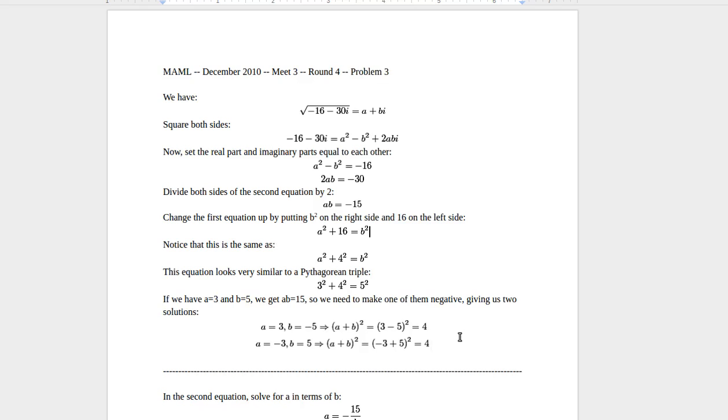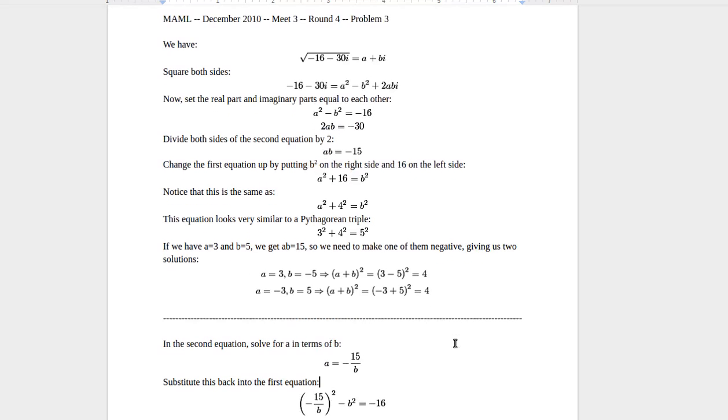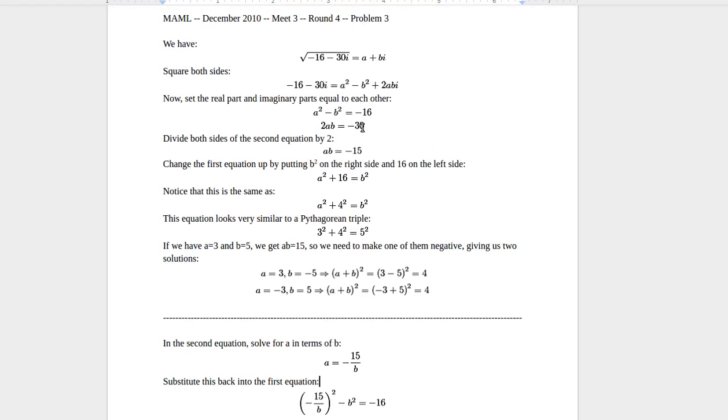So this solution is very short, but it depends on you figuring this out. It depends on you noticing that this equation is similar to a Pythagorean triple. But that won't necessarily always be true when you're taking the square root of complex numbers. So there is another way to solve these kinds of problems. But it's more complicated. So if you wanted the simple solution, this is your simple solution. But for the complicated solution that is more general...